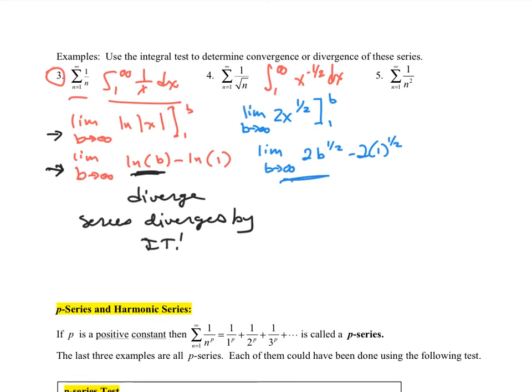I hope you paused and tried this. The antiderivative of x to the negative 1 half is 2x to the 1 half. Plug in b and show your limits. As b goes to infinity, the square root of infinity is still infinity, so this will diverge. Therefore, the series diverges by the integral test.